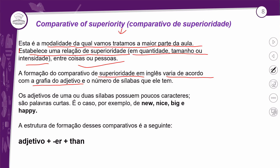Isso vai variar muito. 90% das vezes acontece dessa forma. Os adjetivos de uma ou duas sílabas possuem poucos caracteres — são palavras curtas. É o caso, por exemplo, de NEW (novo), NICE (legal), BIG (grande), HAPPY (feliz). Você vai ter o adjetivo, logo em seguida o sufixo ER, e depois a palavra THAN. Esse sufixo ER vai ser adicionado ao adjetivo.